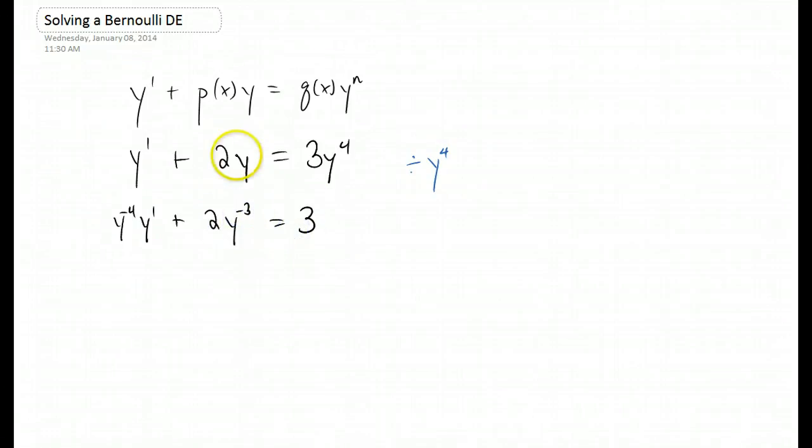We got y to the negative third because we divided y by y to the fourth, and the power comes out to be negative 3. Now is the part where we use a substitution. I'm going to use the letter v for our substitution in case we have to do a u substitution later. And v is always going to be y to whatever power turns out to be right there. So in this case, it's y to the negative third.